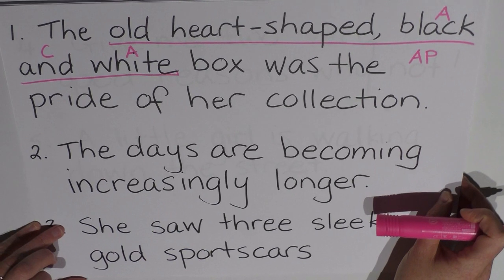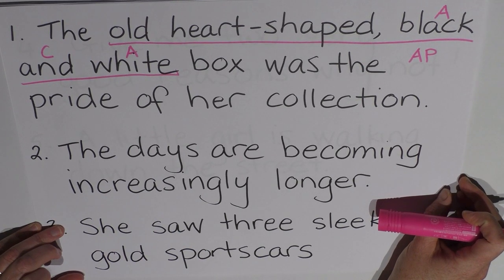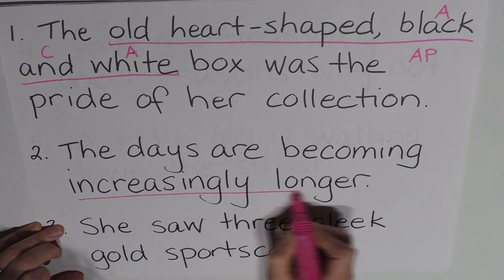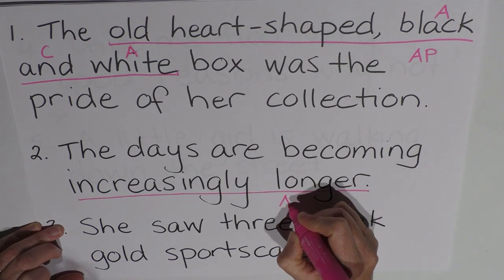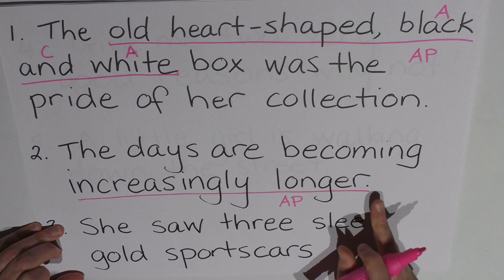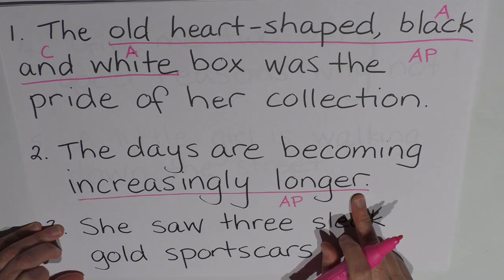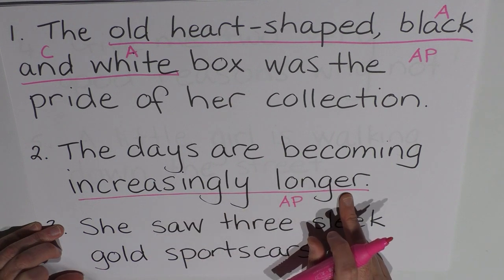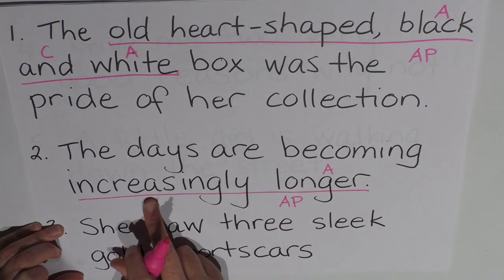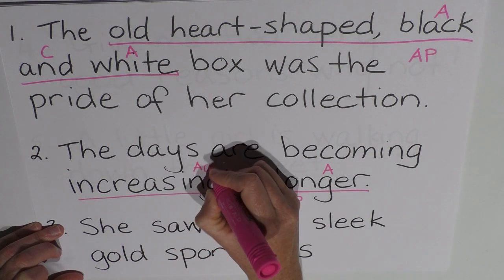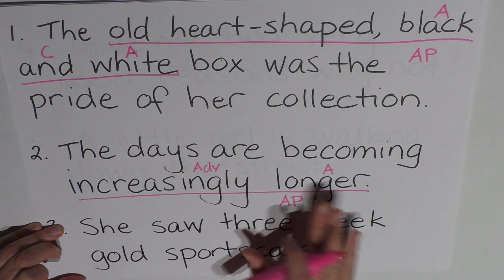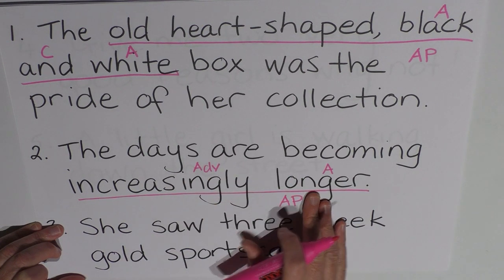The days are becoming increasingly longer. Now in this situation, increasingly longer is our adjective phrase. So that's AP for adjective phrase. Longer is the gradable, shows that long is gradable. It's the comparative form of long. And increasingly here is modifying longer. So longer is an adjective in its comparative form, and increasingly is an adverb modifying the adjective. And they're both part of the adjective phrase, all pointing to longer. And of course, this is about the days.